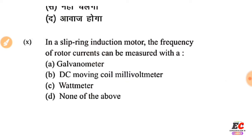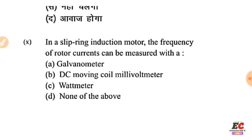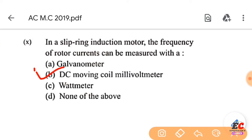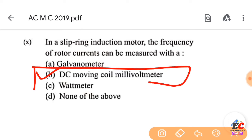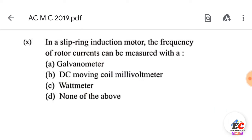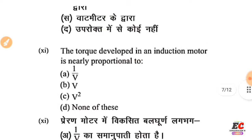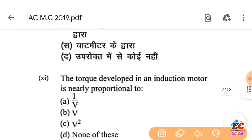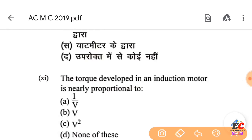In a running induction motor, the frequency of rotor currents can be measured with a DC moving coil millivoltmeter. The torque developed in an induction motor is nearly proportional to V squared.